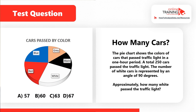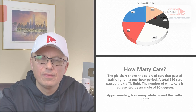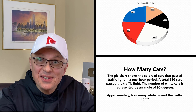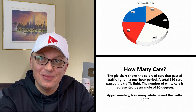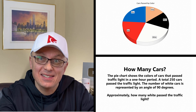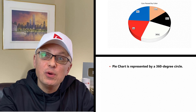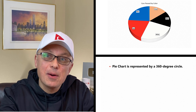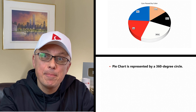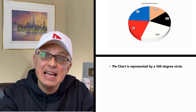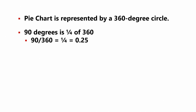Let's continue to find the correct solution. A lot of times the answer is given as part of the question, and this is one of those cases. The pie chart is represented by a 360-degree circle. We know that a 90-degree angle represents the white cars, and 90 degrees is a quarter of 360.